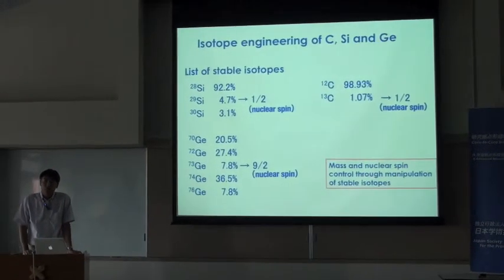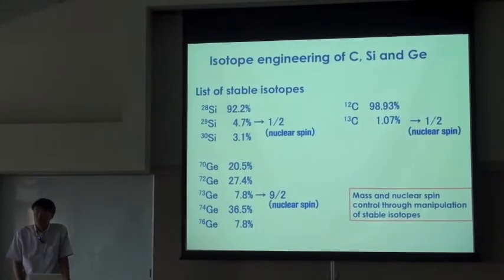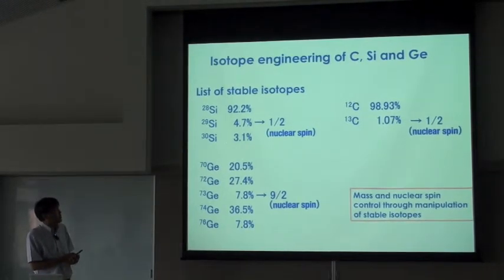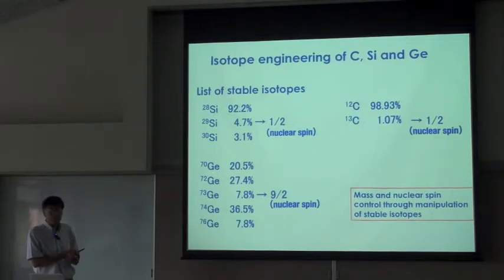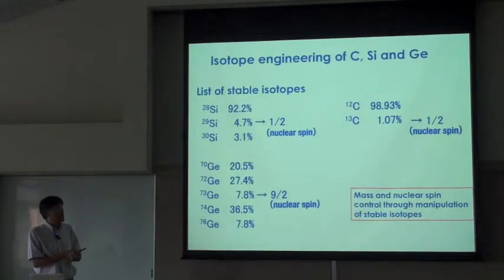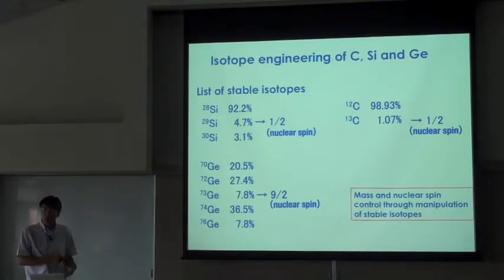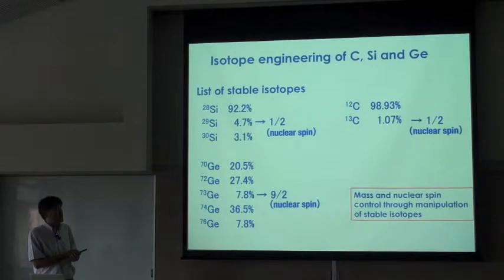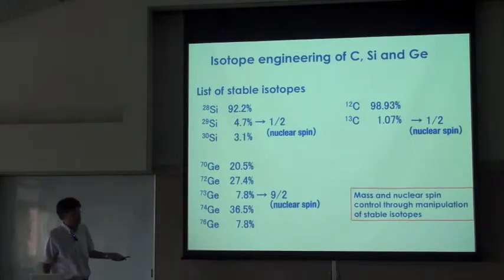I've been working on so-called isotope engineering of semiconductors, especially in the past few years on silicon. I started from isotope engineering of germanium when I was a graduate student at UC Berkeley, then moved on to isotope engineering of silicon, and more recently we are working on isotope engineering of carbon diamond, where you have 98.93% of carbon-12, which has no nuclear spin, and 1.07% of carbon-13, which has nuclear spin one-half.